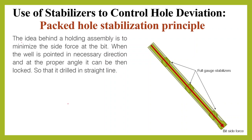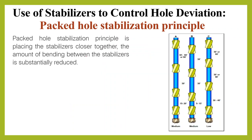The idea behind the holding assembly is to minimize the side force at the bit. In a previous video we talked about fulcrum and pendulum principles, where we need to put a bit side force upward or downward. When the well is pointed in the necessary direction and at the proper angle, it can then be locked. With a locked BHA, we don't need more angle change — we need to drill in the tangent section in a straight line with no change in angle. This is done using the packed hole stabilization principle.